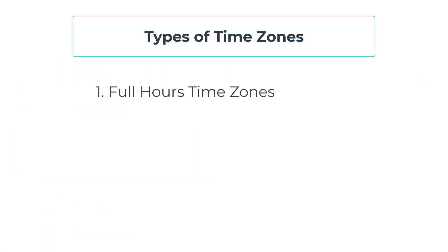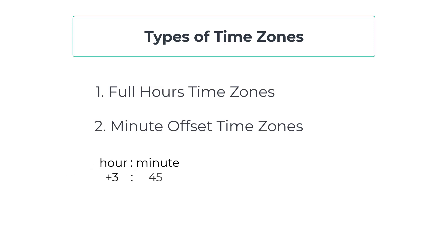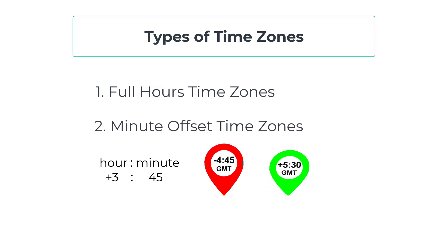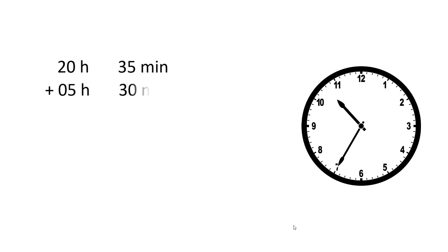The second type of time zone is the minutes offset time zone. This type of time zone consists of both hours and a minutes part, such as GMT minus 4:45 or GMT plus 5:30. To implement this type of time zone, we will use the same logic we used for the full hour time zone. Let's say we have UTC time of 20 hours and 35 minutes, and we wish to add a time zone of 5 hours and 30 minutes.